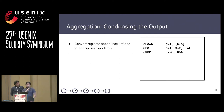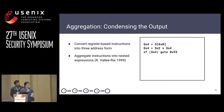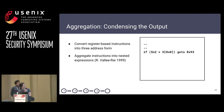To further condense our output, we aggregate our representation into nested expressions. We start by converting the register-based instructions into the three-address form — this is merely cosmetic. Then, based on the usages and definitions of the registers, we aggregate these instructions. The first one could be aggregated into the second, and further aggregated into the third, and eventually the whole block could be summarized with only one expression.